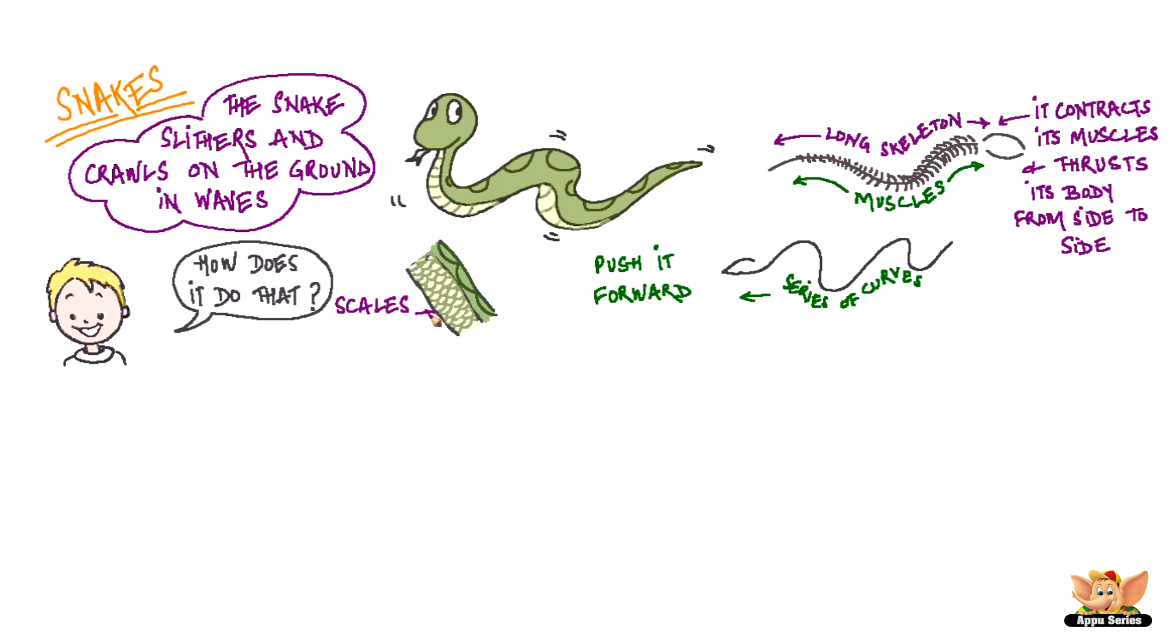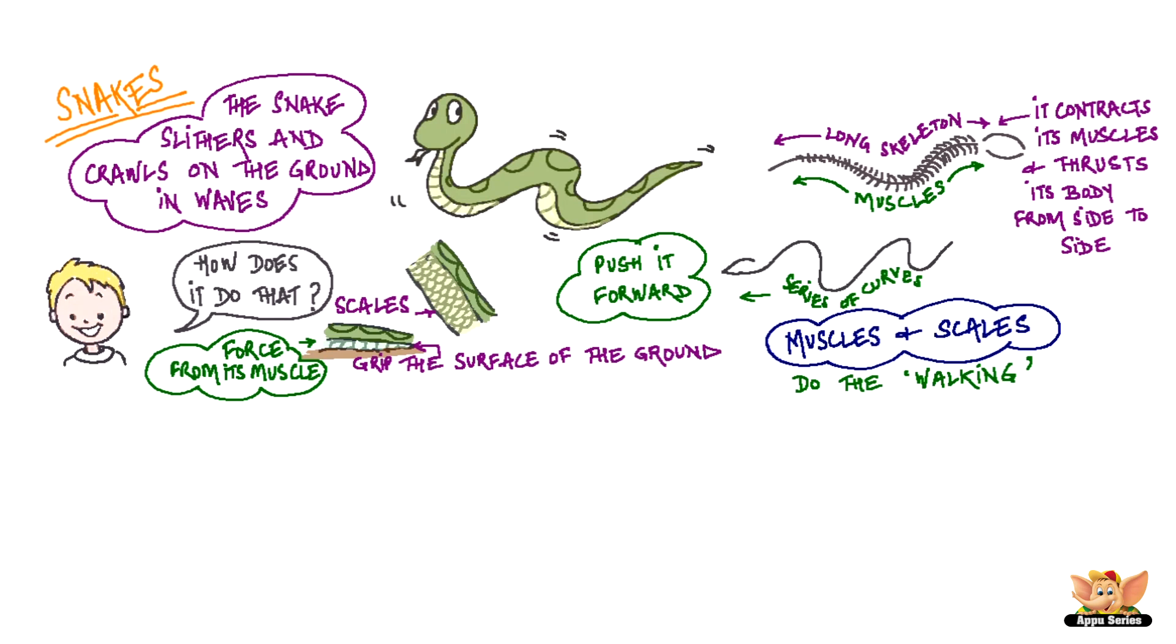Rectangular scales line the underside of the snake's body. These scales grip the surface of the ground and help the snake to use the force from its muscles and push its body forward. So while the snake doesn't have legs, its muscles and scales do the walking.